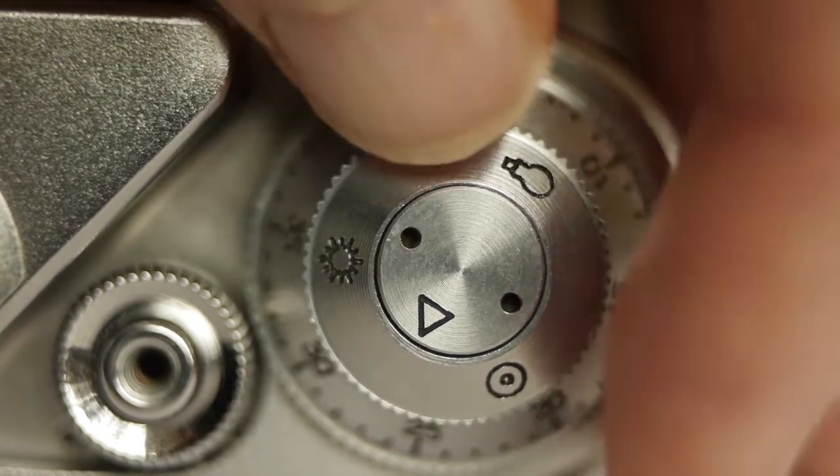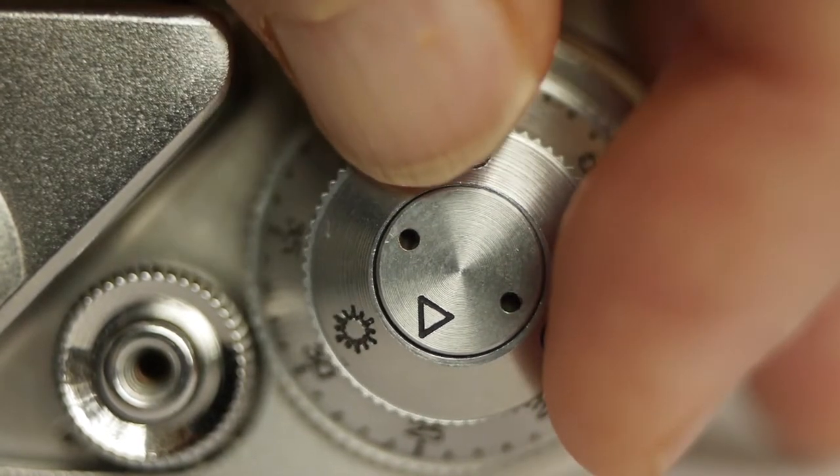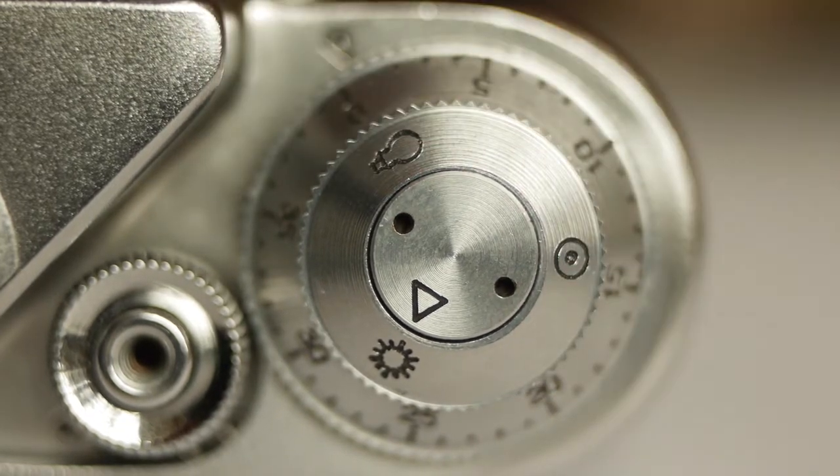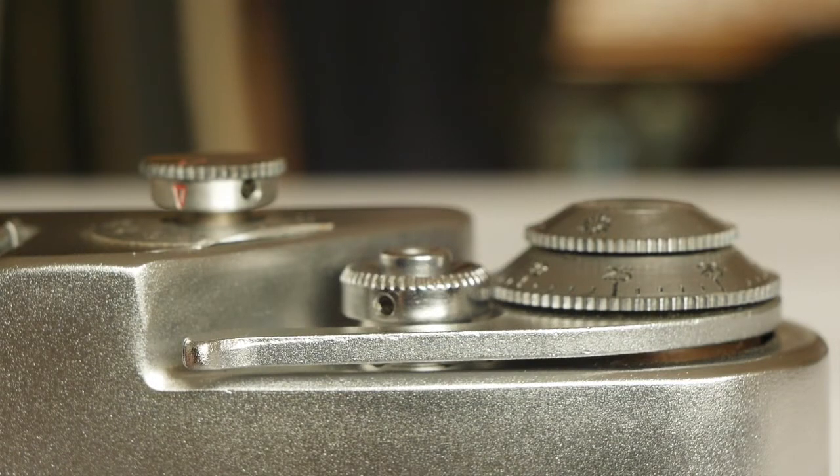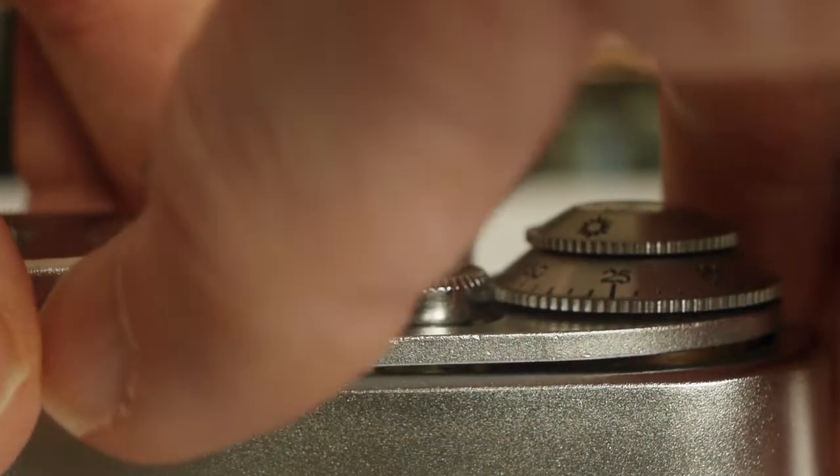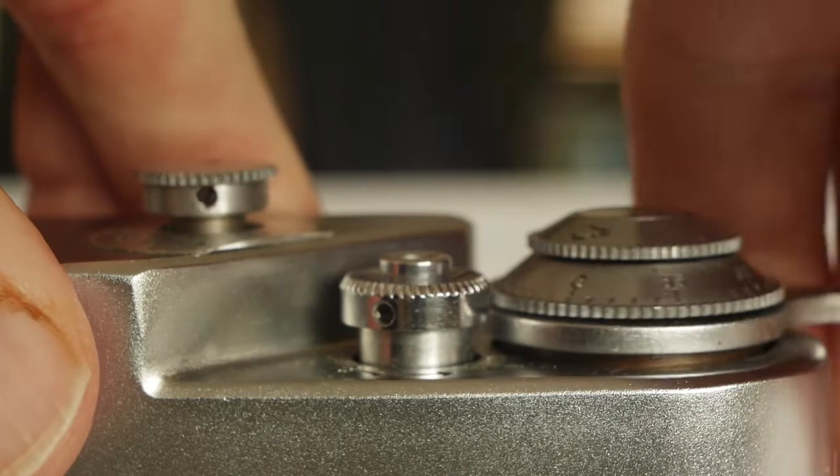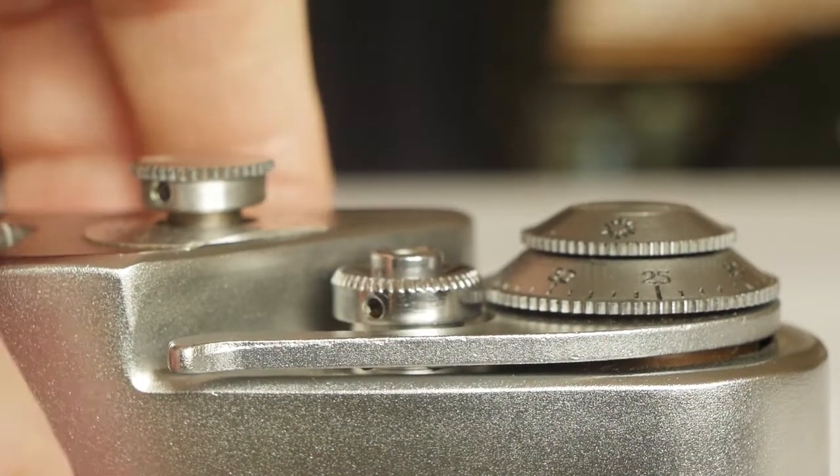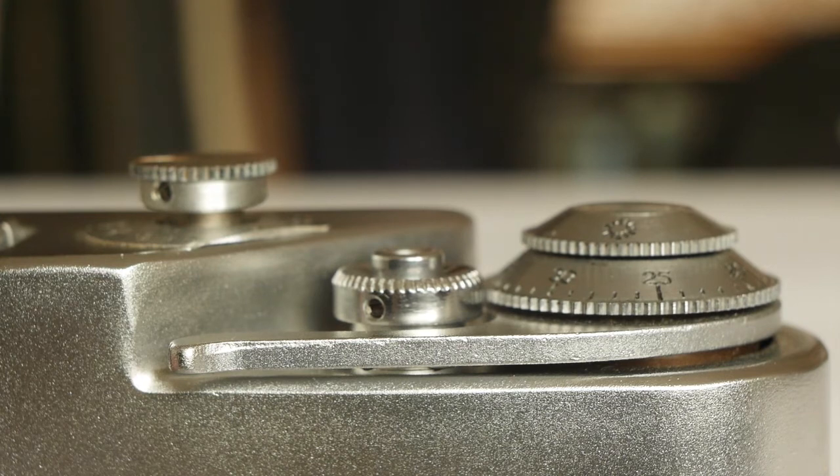To set the shutter speed on this camera, always remember to first wind on. Now, because the FED has a lever wind, it's very easily done. Turn it around and the shutter is now primed. Only now can we change our shutter speed.